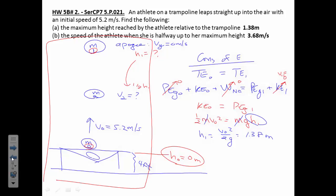Part B: now find the speed of the athlete when she's halfway up to her maximum height. Well, same thing. I can start from any starting point here. We know what the height is now so we'll know half the height is now. So height two is half of the 1.38 meters.